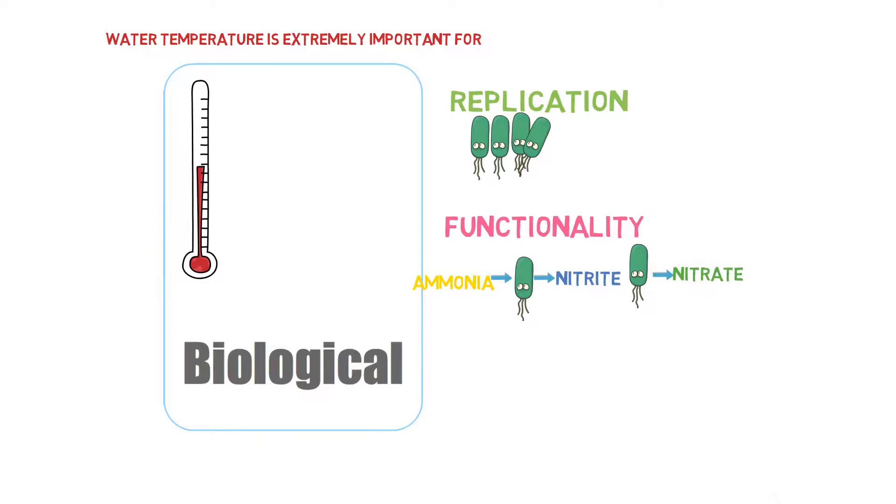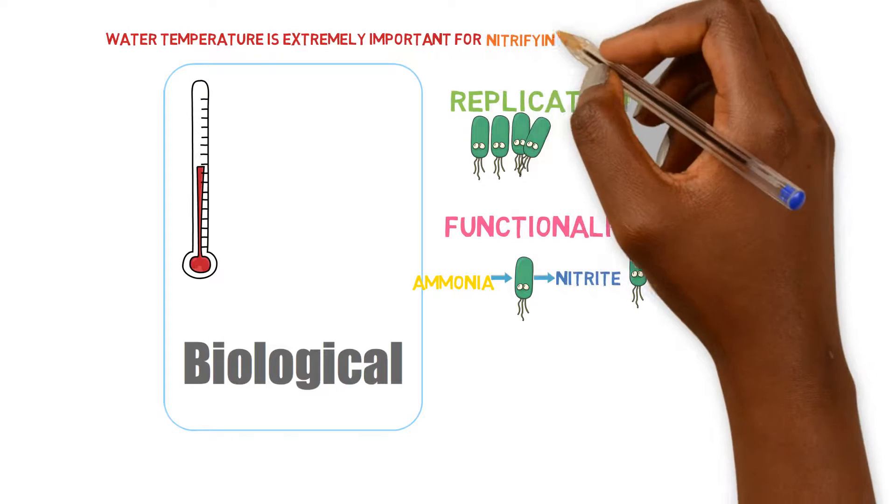Bacteria operate in a wide variety of temperatures, depending on the type we're looking to optimize. There's a wide variety of bacteria in aquaponics, and I'm assuming you're referring to nitrifying bacteria.